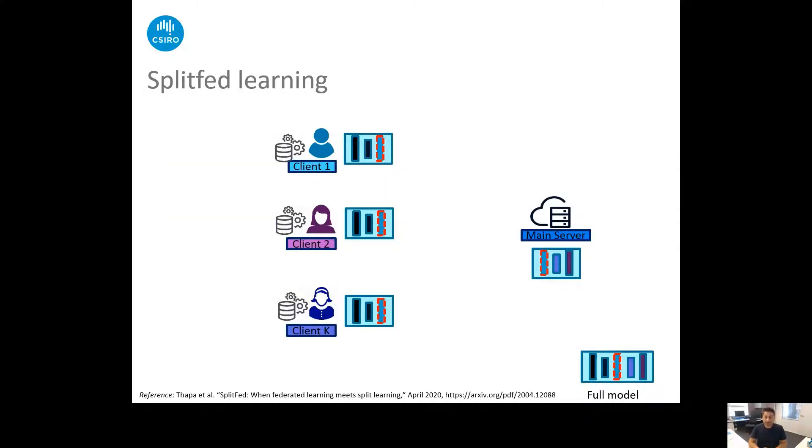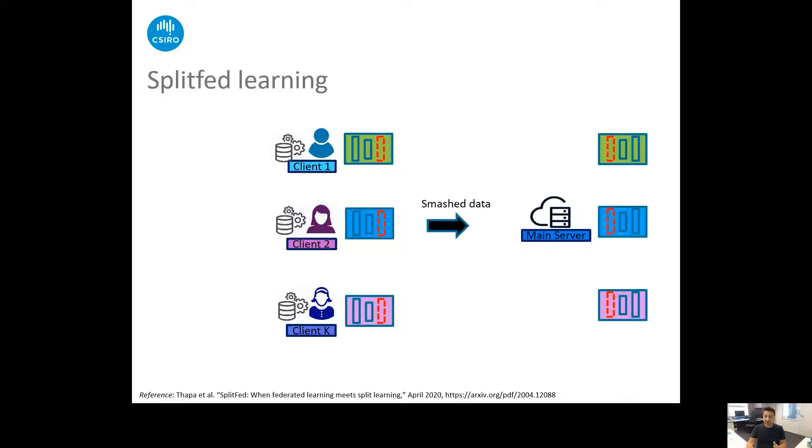Now this is our distributed setup. As an example, three clients with their local data and one main server ready to perform distributed machine learning collaboratively. We send the client side model to all the clients and server side model to the main server. Now the training in split fed learning happens as follows. Each client performs the forward propagation of their client side models independently and in parallel. This is opposed to the split learning where sequential training happens across the clients which forces the clients to be idle as they need to wait for other clients to finish their training with the server.